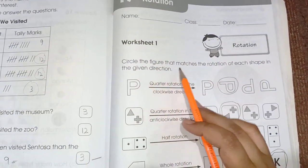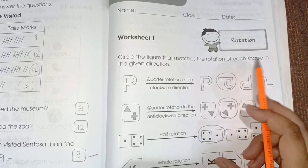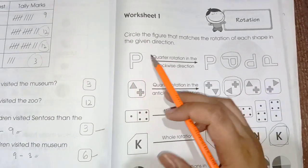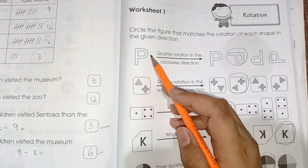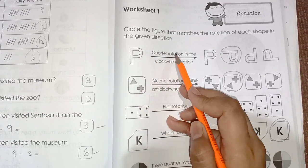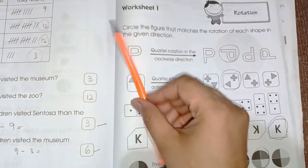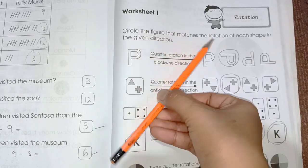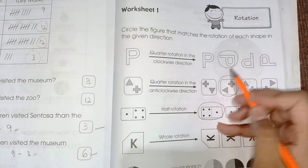Rotation. Circle the figure that matches the rotation of each shape in the given direction. You can draw the shape on the paper to rotate. So if we rotate this shape quarter into clockwise, it means this is like this. So we are going to turn this like this. So here we have this shape.